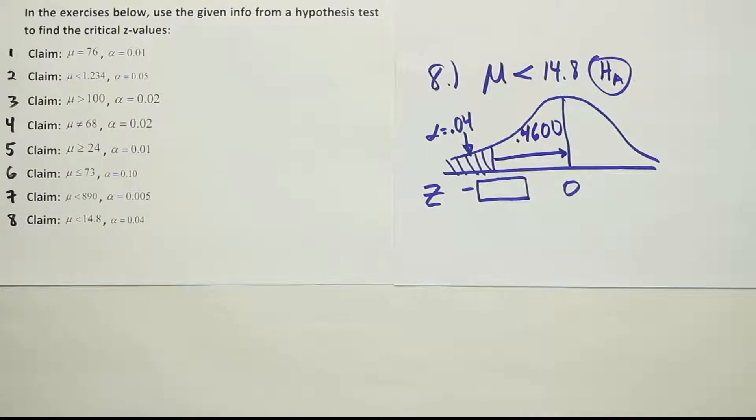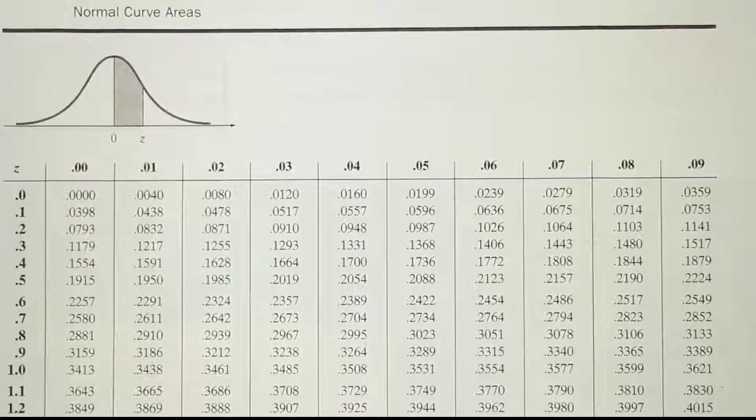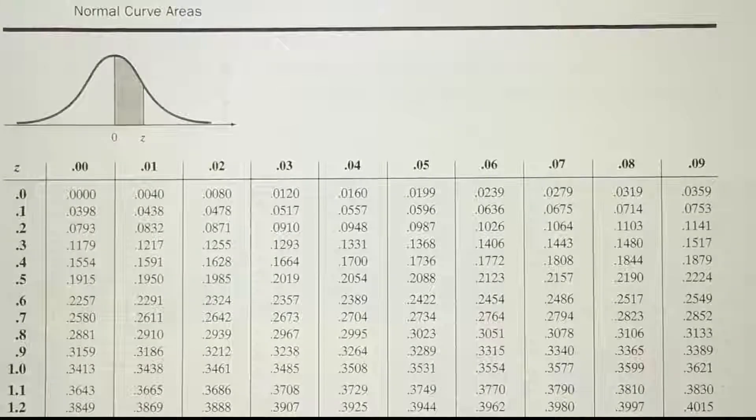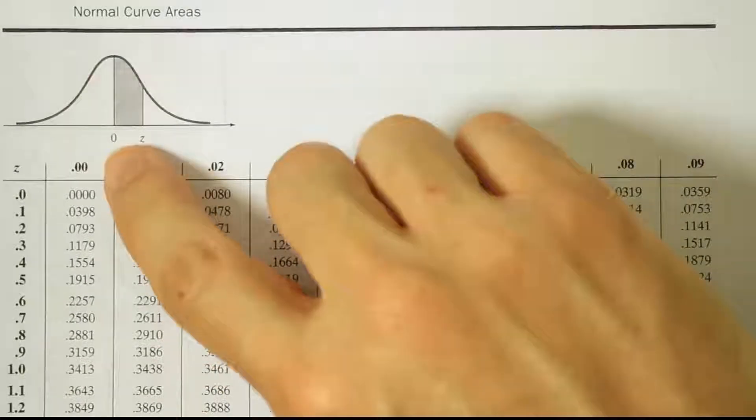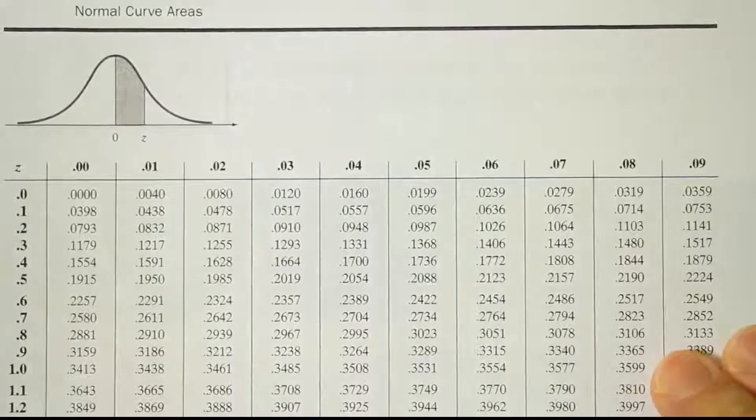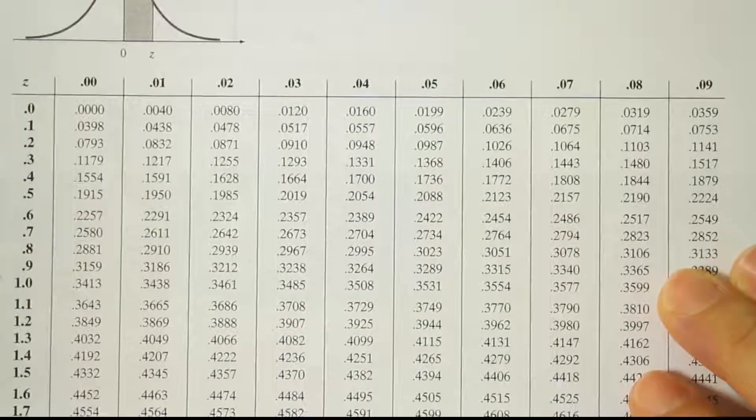So let's go to the z-table now and look up 0.4600. Okay, so we're looking for the closest area to 0.4600. We're going to look down on this row until we find something near there. And then we'll find the corresponding z-score to that.